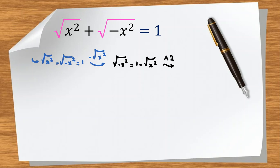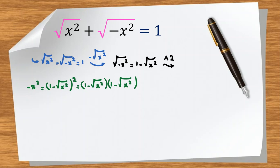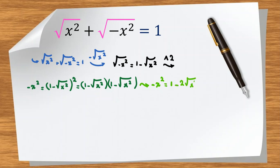We raise both sides to the power of 2. The left-hand side becomes negative x squared. The right-hand side is 1 minus square root of x squared, all squared, which we expand as 1 minus square root of x squared times 1 minus square root of x squared. This gives us negative x squared equals 1 minus 2 times square root of x squared plus x squared.